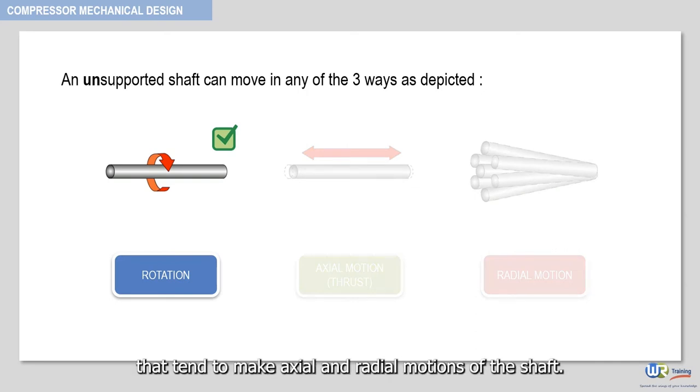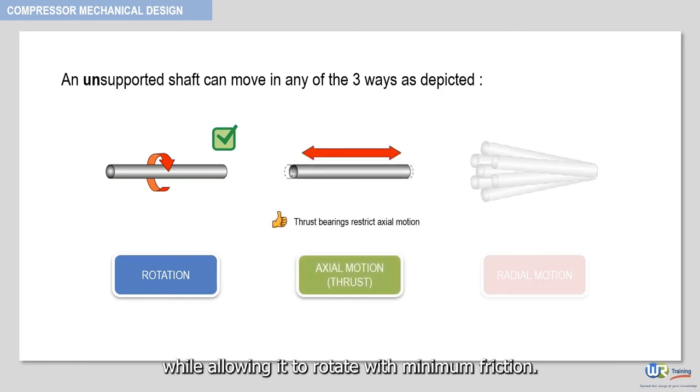These forces will be covered in a later section. Thrust bearings are used to restrict the axial motion of the shaft while allowing it to rotate with minimum friction.